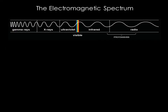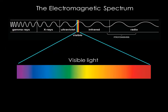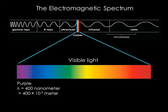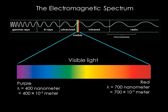Our eyes can see visible light. Visible light has wavelengths between 400 and 700 nanometers. A nanometer is a billionth of a meter. The shorter wavelength end at 400 nanometers corresponds to purple light, and the longer wavelength end at 700 nanometers corresponds to red light. For comparison, a human hair is between 80,000 and 100,000 nanometers.